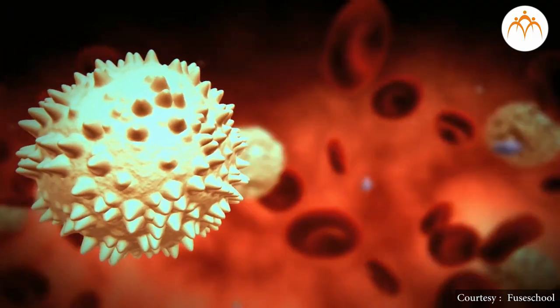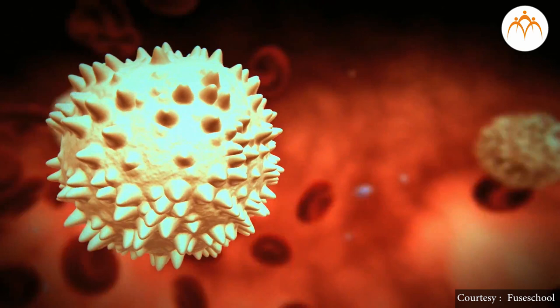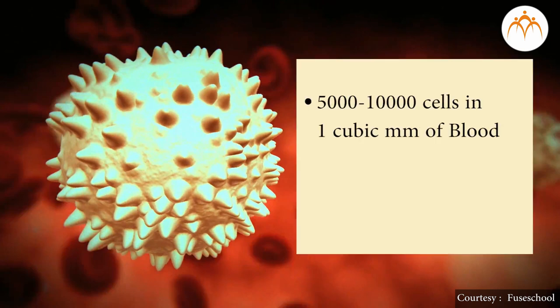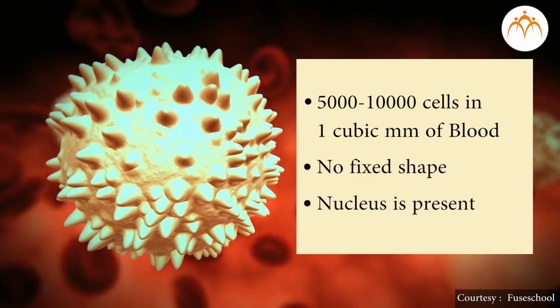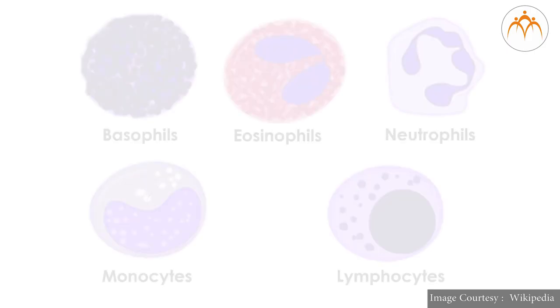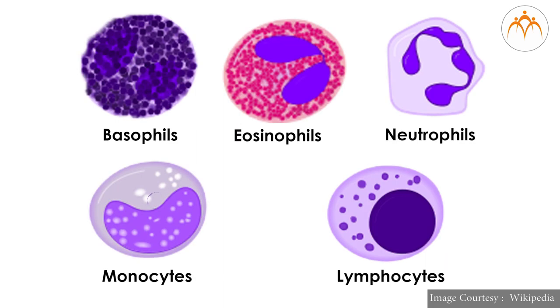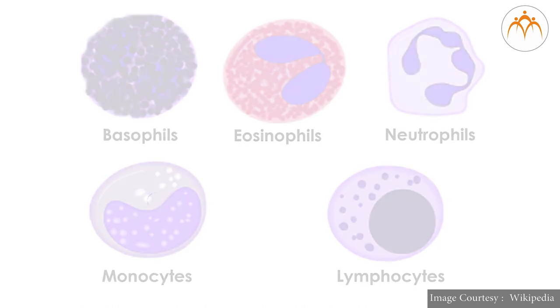White blood cells, or leukocytes, are present in comparatively smaller numbers — only 5,000 to 10,000 cells in one cubic millimeter of blood. These cells are large but do not have a fixed shape. They have a nucleus. These types are based on the shape of the nucleus and nature of the cytoplasm. Sometimes there is an increase in the number of WBCs due to pathological reasons. This is called leukemia, or blood cancer.